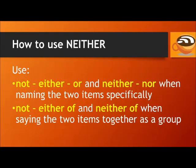As you can see in the example sentences, we use not either...or and neither...nor when naming the two items specifically — I speak neither French nor Spanish. And we use not either of and neither of when saying the two items together as a group — I speak neither of those languages.